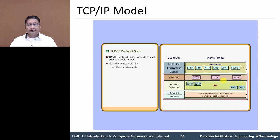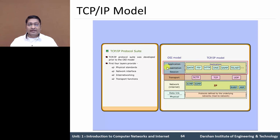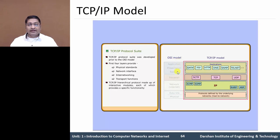The first 4 layers provide Physical Standards, Network Interface, Internetworking, and Transport Functions. In the upper layer, the Application Layer has a few protocols, which are combined with the Application, Presentation, and Session Layer of the OSI model. It is made up of interactive modules, each of which provides a different specific functionality.